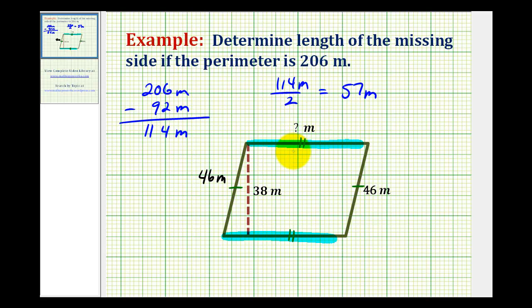Which would be the length of the missing side. 57 meters here as well as down here.